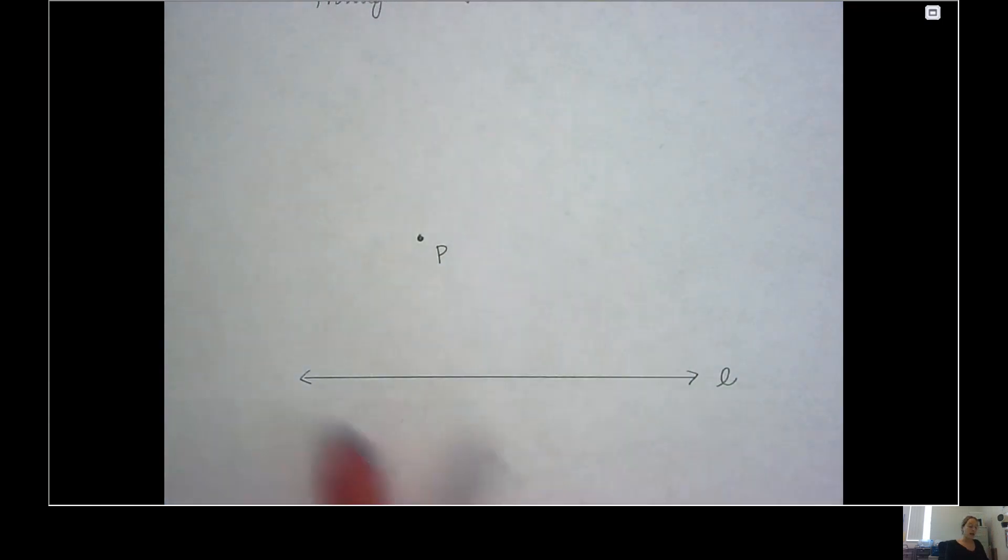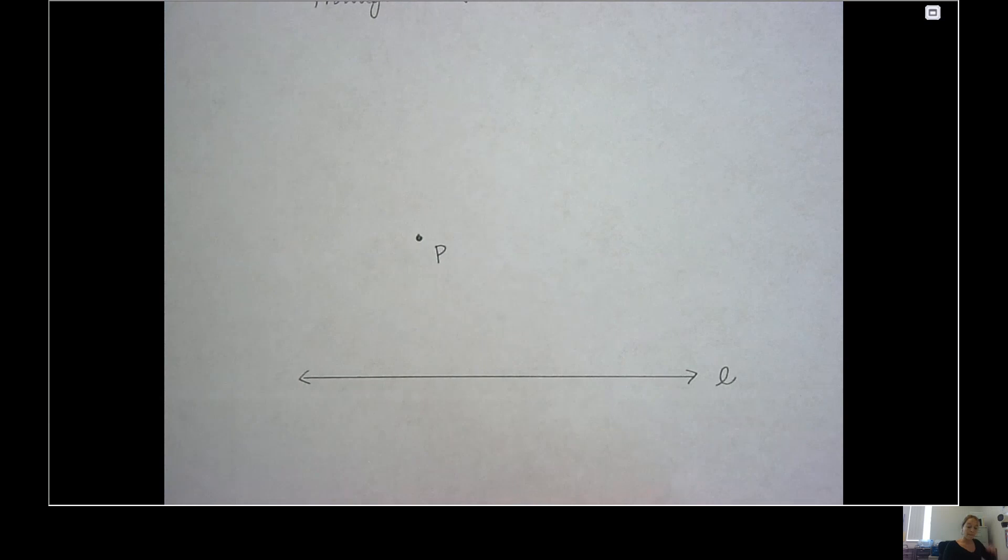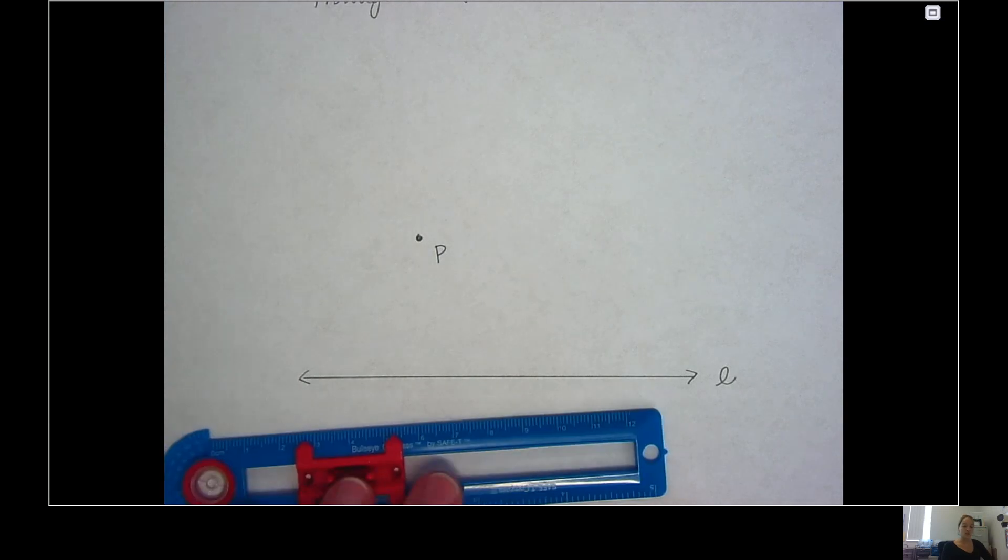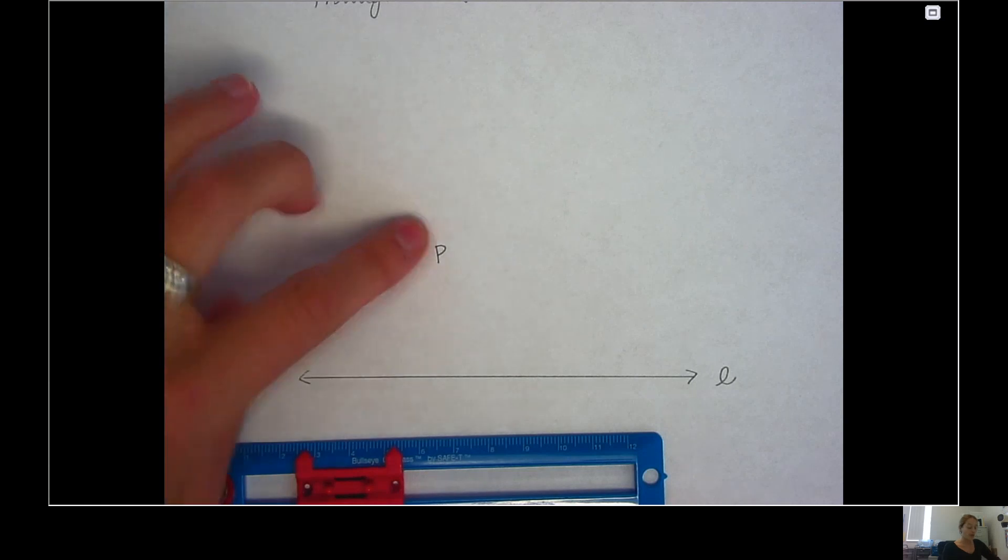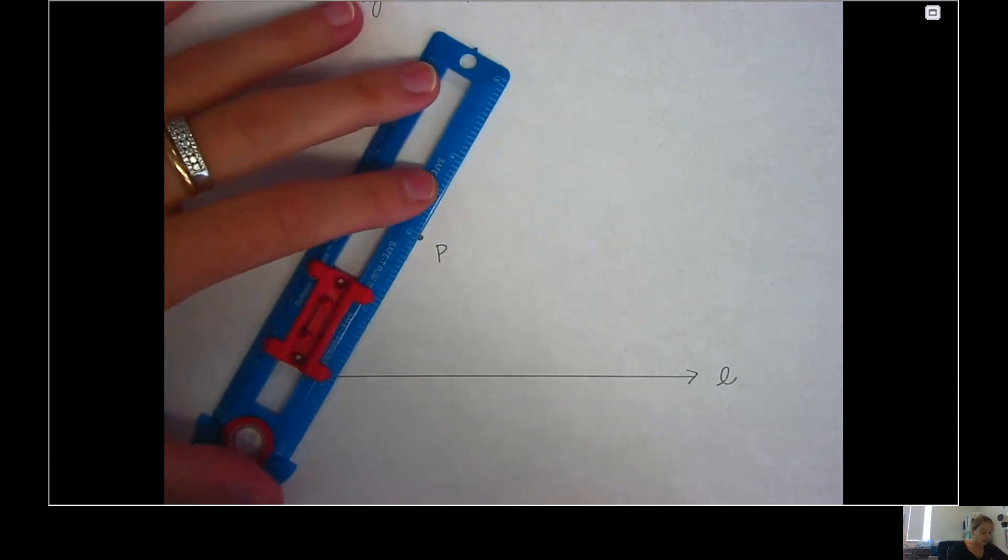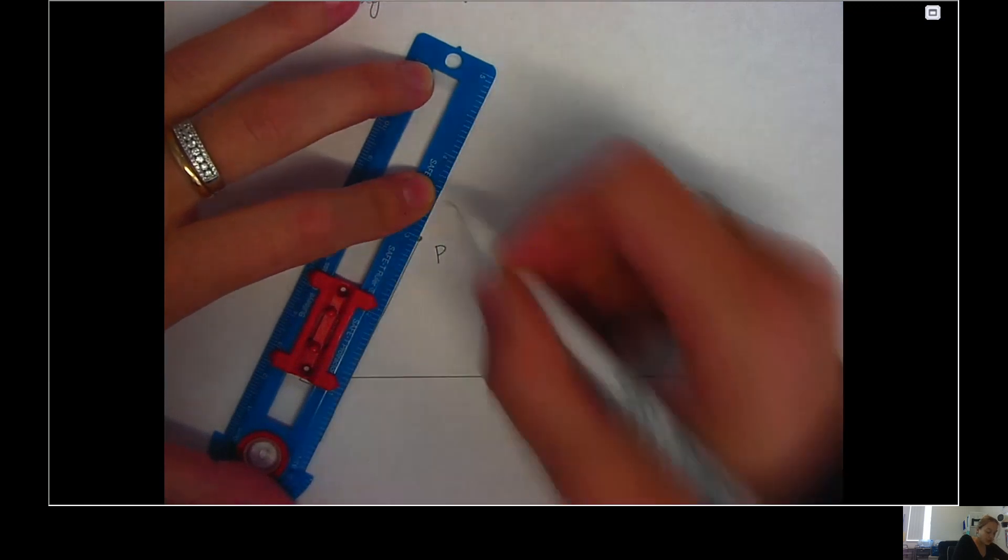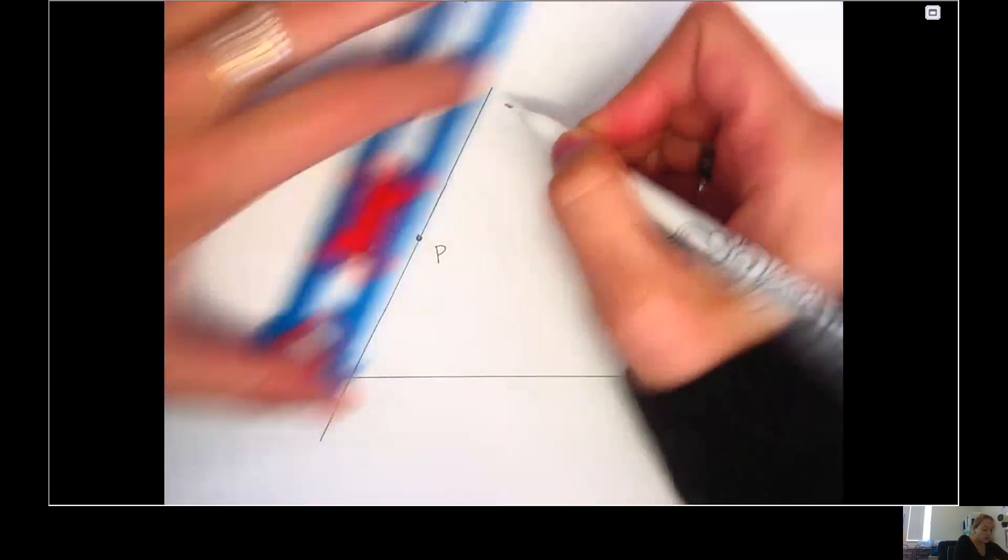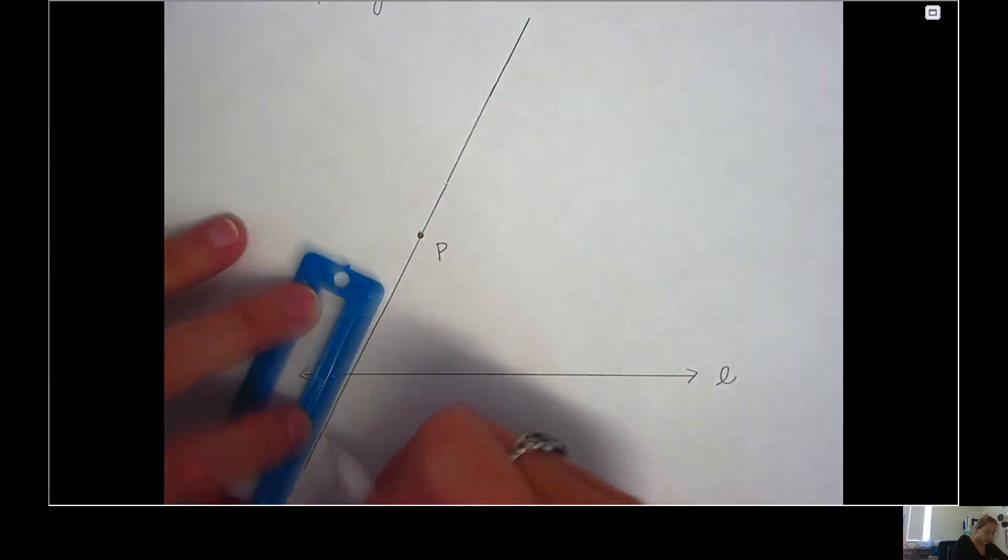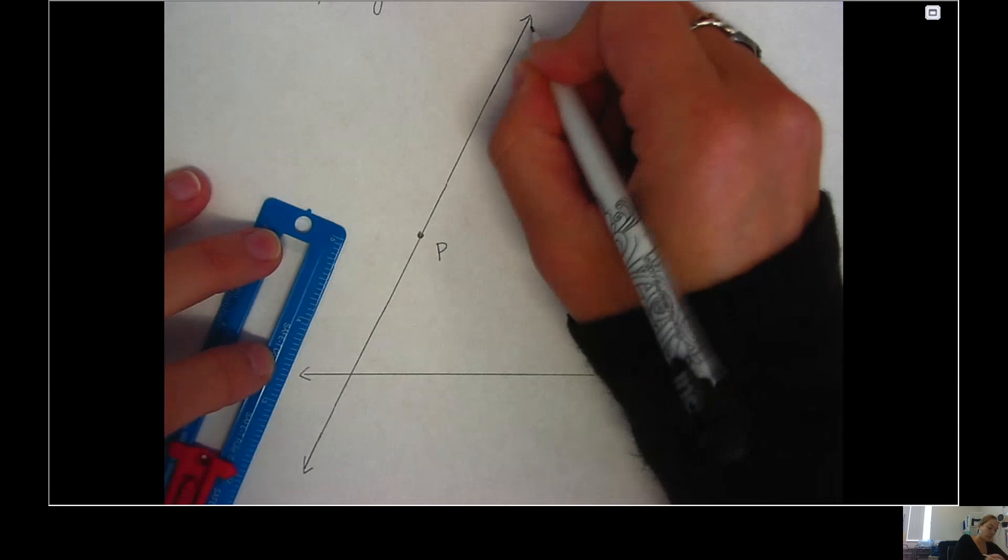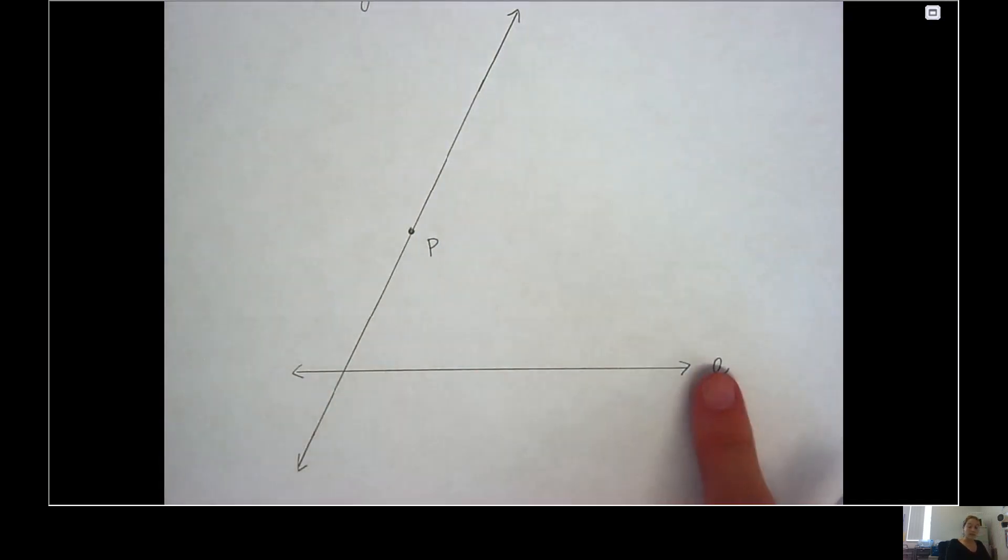So I want to construct a line that is parallel to line l that goes through point P. My first step is I'm going to take the straight edge of my compass and I'm going to draw a line through point P that intersects line l. And I need to make sure that when I do this, I draw the line pretty long both above and below.